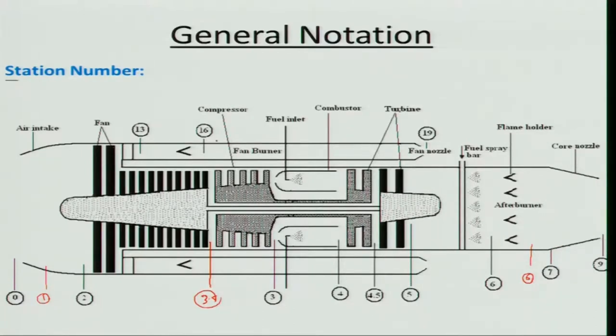For the fan stream (bypass), stations 13 to 9 are used. This station numbering is a standard — the Aerospace Recommended Standard used internationally — which is why we adopt it.